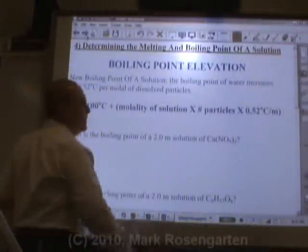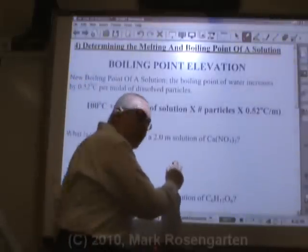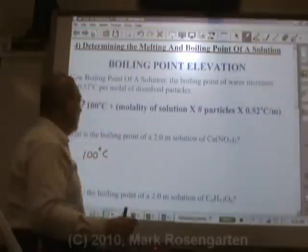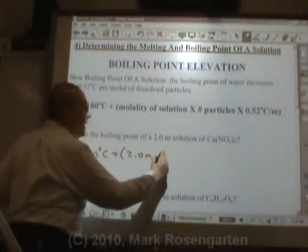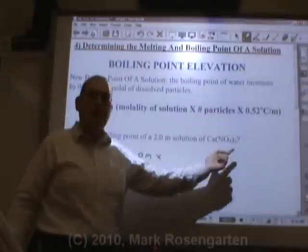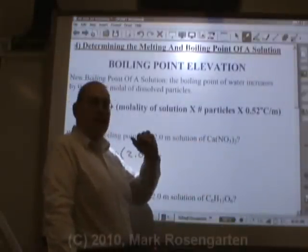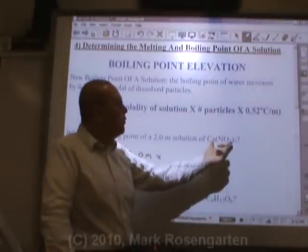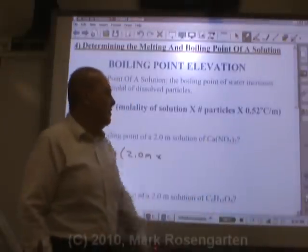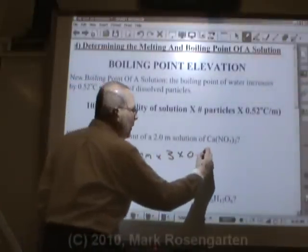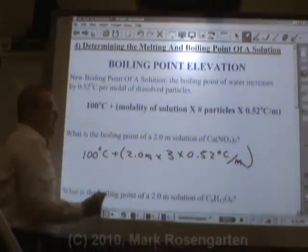What is the boiling point of a 2.0 molal solution of calcium nitrate? The normal boiling point is 100 degrees Celsius. Add to that the molality of the solution — 2.0 molal — times the number of particles that calcium nitrate breaks up into when you put it into solution. Being an ionic compound and a soluble one, it will break up into one calcium ion and two nitrate ions, for a total of three ions per formula unit, or three moles of ions per mole of calcium nitrate. Three particles times 0.52 degrees Celsius per molal — the molal will cancel and you'll be adding degrees Celsius to degrees Celsius.